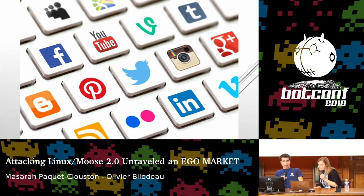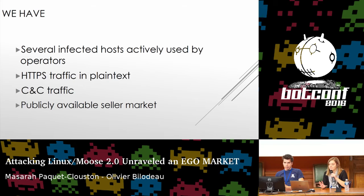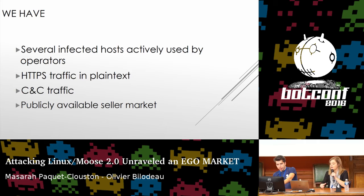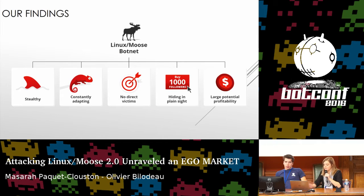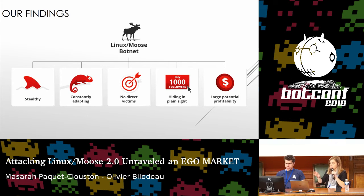So where we're at now: we've got several infected hosts actively used by operators. We've got HTTPS traffic in plain text. We've got C&C traffic. While doing all that, we also went into the seller's market and gathered a database with prices and quantities. We've got all that data and need to analyze it. We summarize our findings within five characteristics that explain the whole scheme in which Linux Moose is involved.